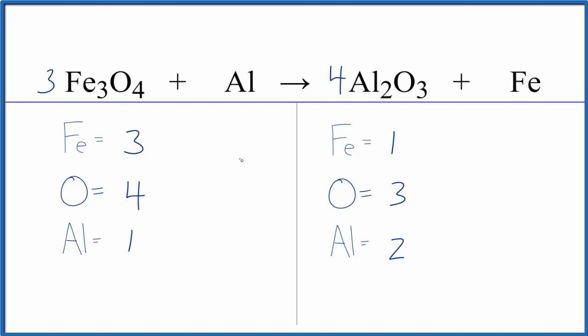So that would balance the oxygens. Let's try that. We have four oxygens times three and that gives us 12, and then three times three, so now we have nine irons, but we know we can easily fix the irons.